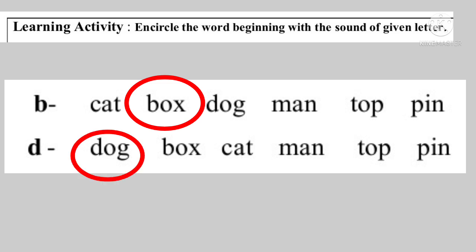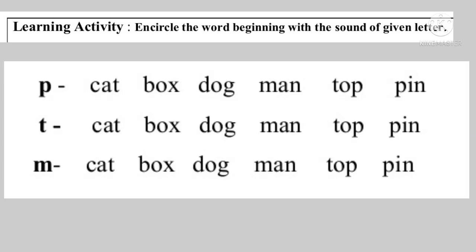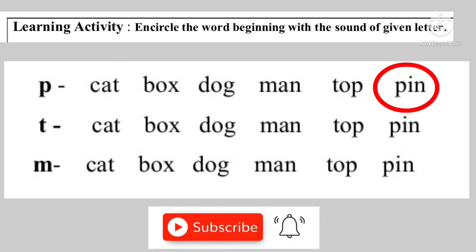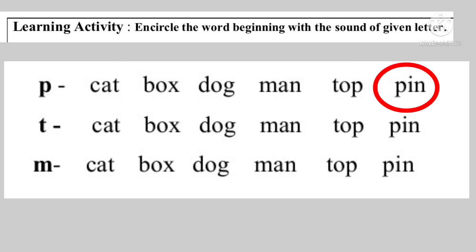We relate to a P — that's out of the auto — so more the path: get box, dog, man, top, pin. Tar P ya dhuni ne suru vana raha. The given words are: cat, box, dog, man, top, pin.